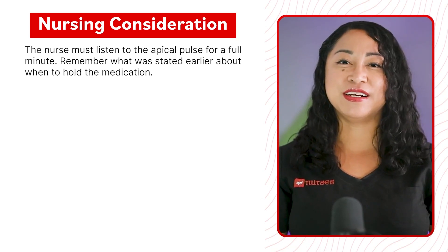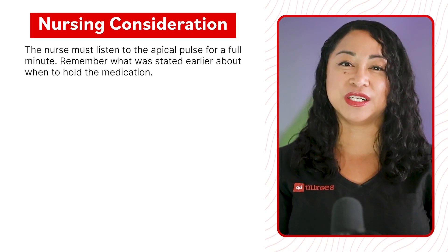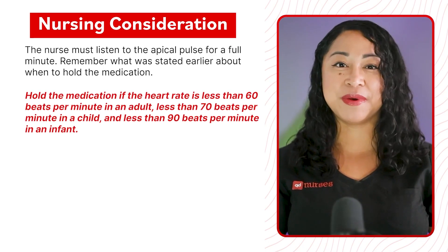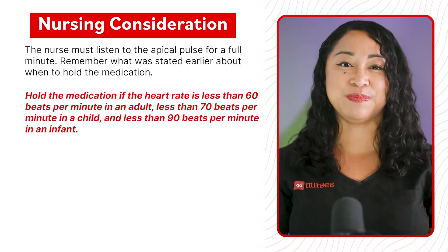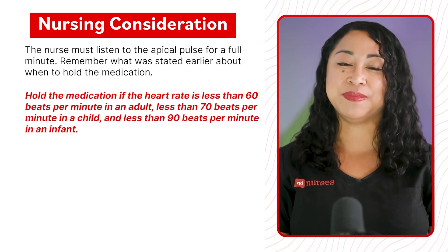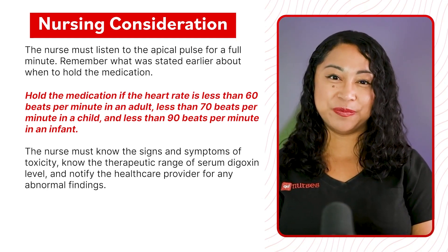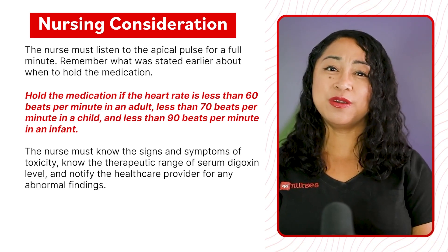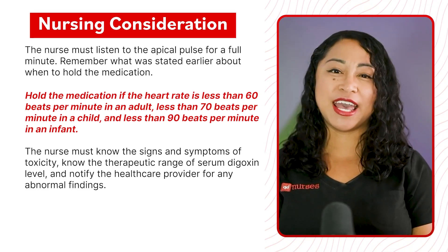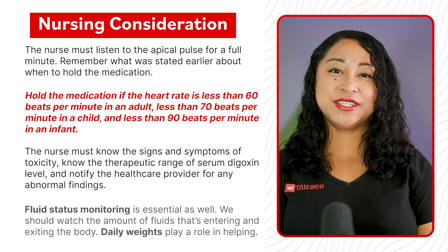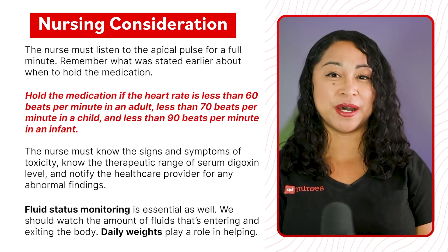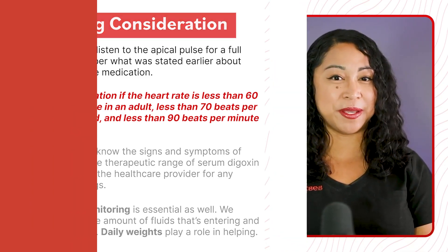Nursing consideration: The nurse must listen to the apical pulse for a full minute. Hold the medication if the heart rate is less than 60 bpm in an adult, less than 70 bpm in a child, and less than 90 bpm in an infant. The nurse must know the signs and symptoms of toxicity, know the therapeutic range of serum digoxin level, and notify the healthcare provider for any abnormal findings. Fluid status monitoring is essential — watch the amount of fluid entering and exiting the body, and daily weights play a role in helping.